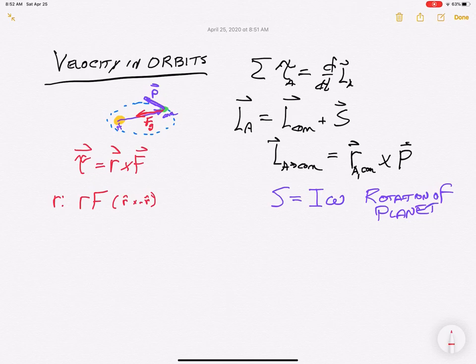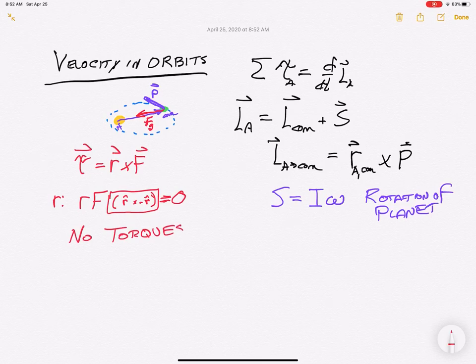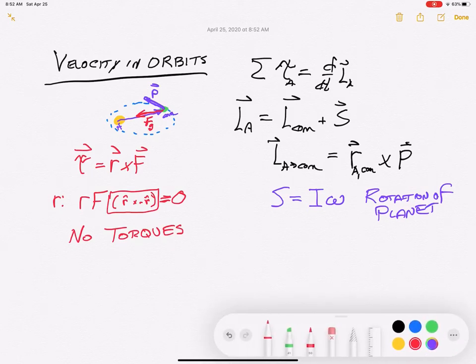All of this is moot because this term here equals zero. In a simple two-body planetary system, there are no torques on the system. What does no torques mean? No torques means the conservation of energy.